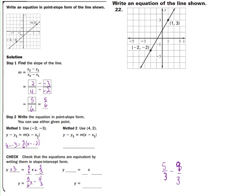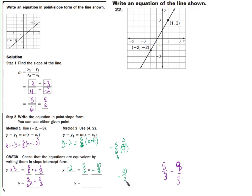Now verify using the other point (4, 2): y - 2 = (5/6)(x - 4). Distribute: (5/6)x - 10/3. Add 2 (which is 6/3) to both sides: -10/3 + 6/3 = -4/3. So y = (5/6)x - 4/3. Same result — it's not magic, it's math.